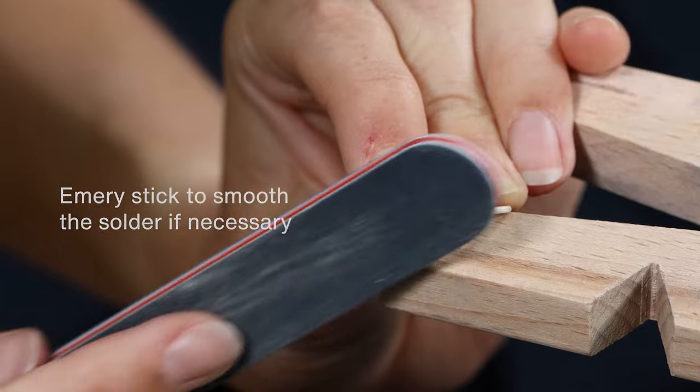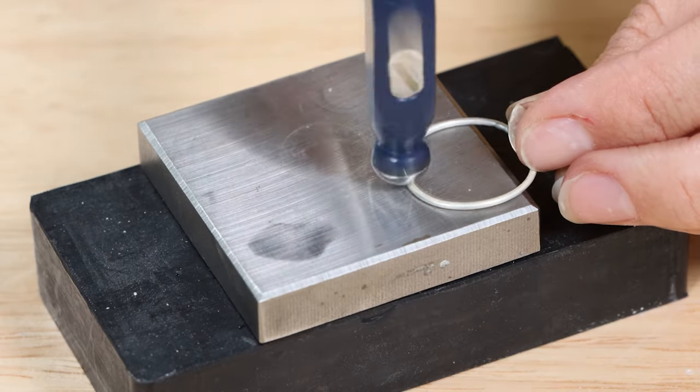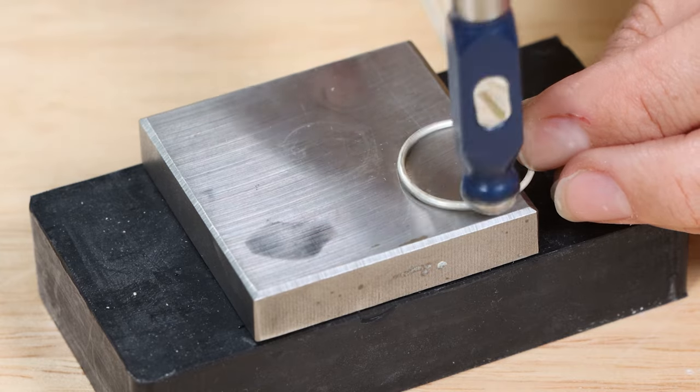When clean and dry, place each hoop on the steel block and gently hit the hoops all the way around using a ball peen hammer or craft hammer.